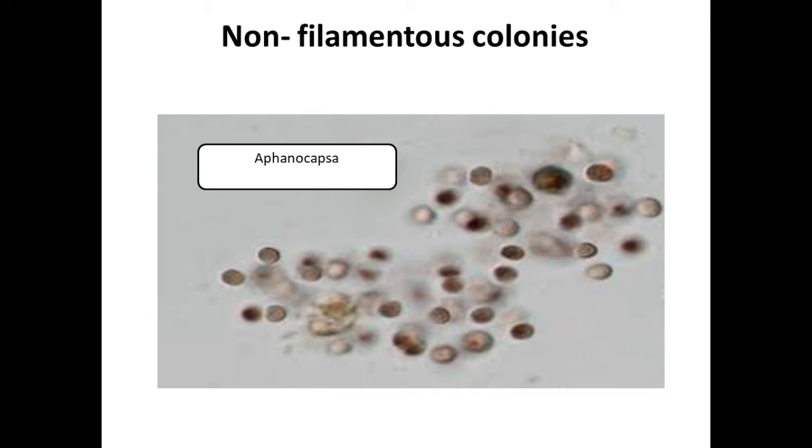Next is the filamentous form. In the same plane, the cell divides in one plane and the form is plate-like. When the cell divides in many planes, it forms three-dimensional colonies.